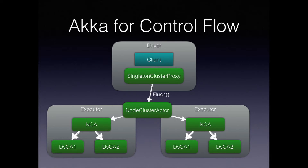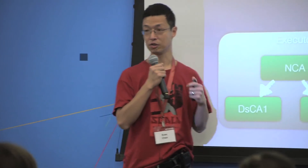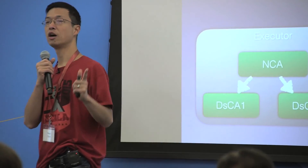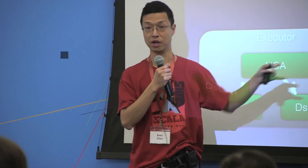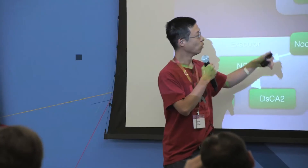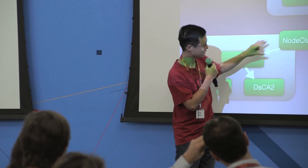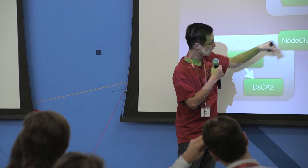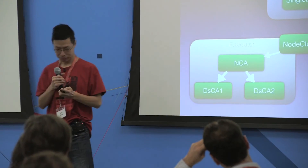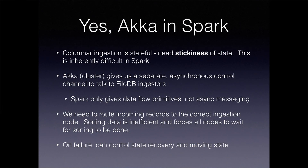In FiloDB we actually embed the logic within Spark and spin up an Akka cluster in parallel to the Spark cluster. We take advantage of something called a cluster singleton — meaning in your whole cluster you want exactly one copy of an actor — because it holds state about how data is distributed amongst different nodes. When we want to send a command such as flush from the driver, we go through a cluster singleton proxy that knows how to find this cluster actor, which then distributes the message to the different nodes.